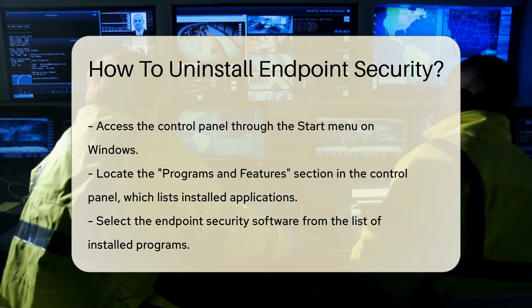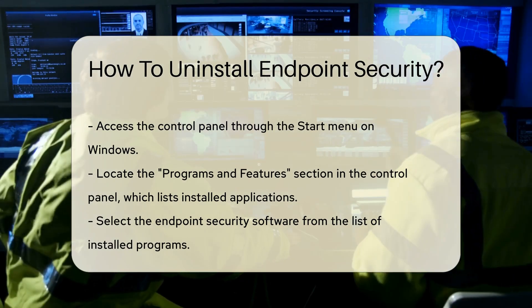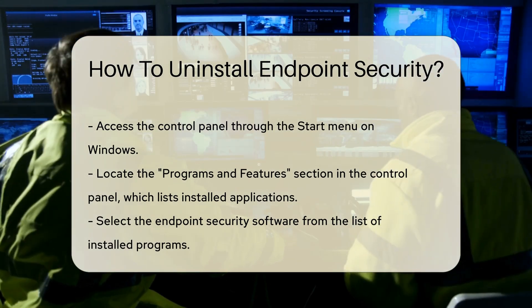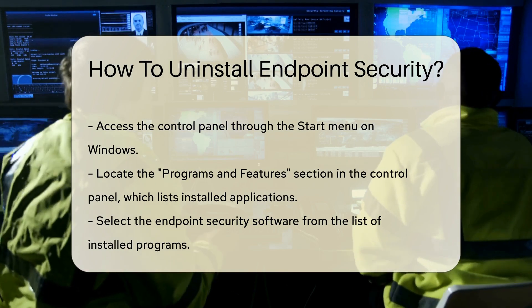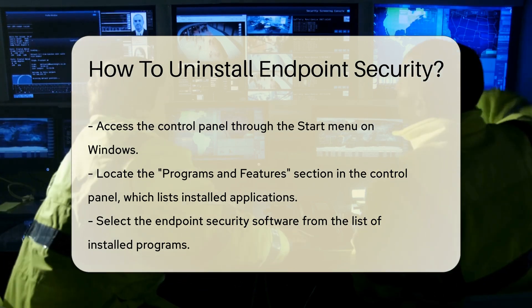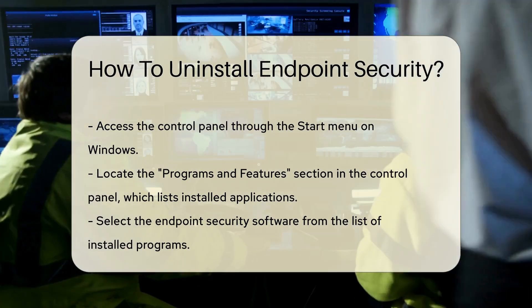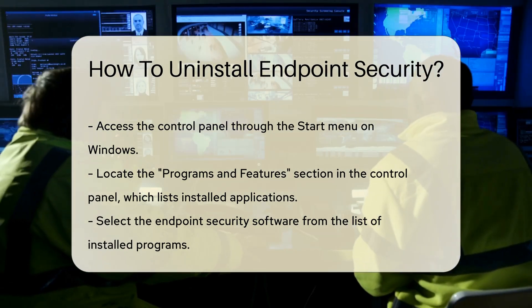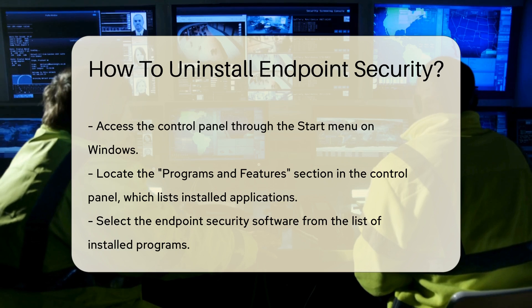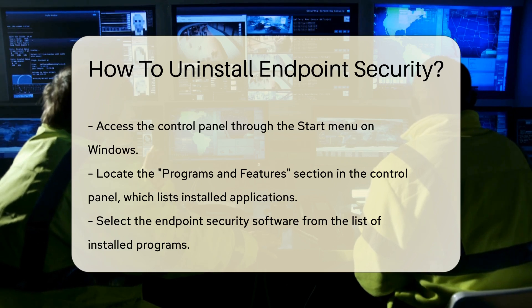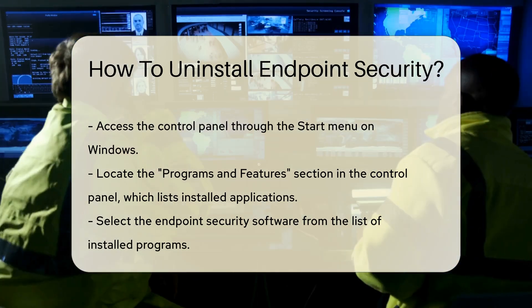Begin by navigating to the control panel on your operating system. For Windows, you can access the control panel through the Start menu. Once there, locate the Programs and Features section. This area lists all installed applications, including your endpoint security software.